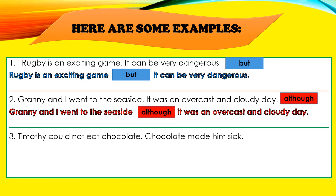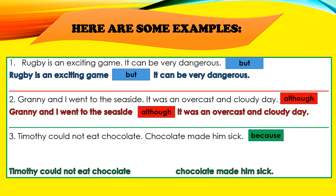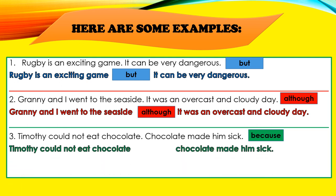Example number three: "Timothy could not eat chocolate. Chocolate made him sick." We've chosen the conjunction BECAUSE: "Timothy could not eat chocolate because chocolate made him sick." Read these examples again, boys and girls. I will give you a few seconds. I hope you now understand conjunctions a lot more.